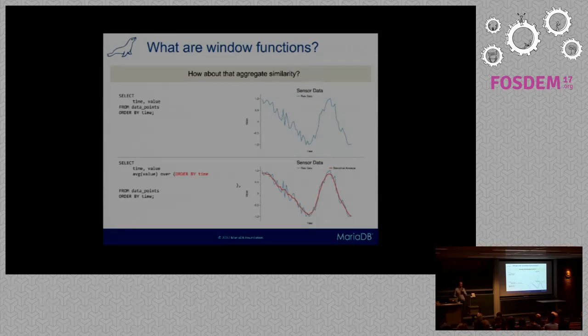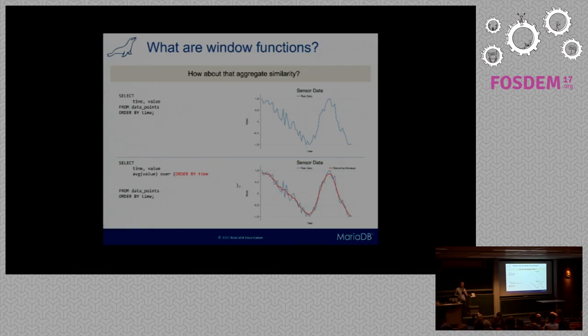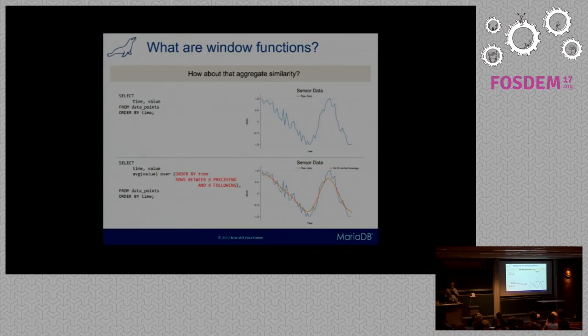We've transformed the regular aggregate average into a window function using the OVER clause. We first need to order the data by time because that's how we want things to be averaged over. Then we need to tell it that we want it to average stuff with a few rows before and a few rows after. We do this with another special syntax called the frame definition. Here we tell it to average three rows before it and three rows after the current value. They do not have to be the same - they can even be references to other columns.